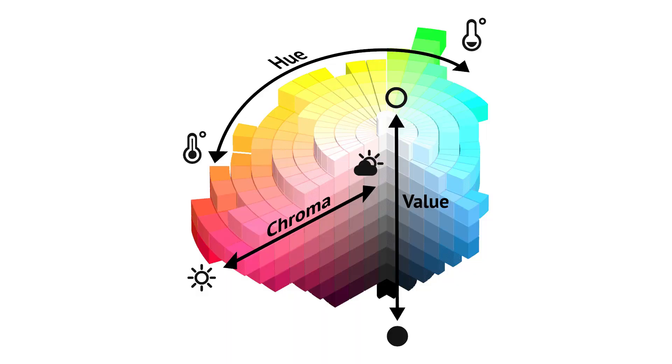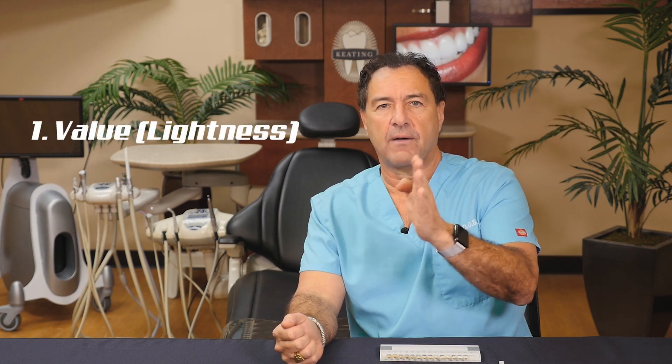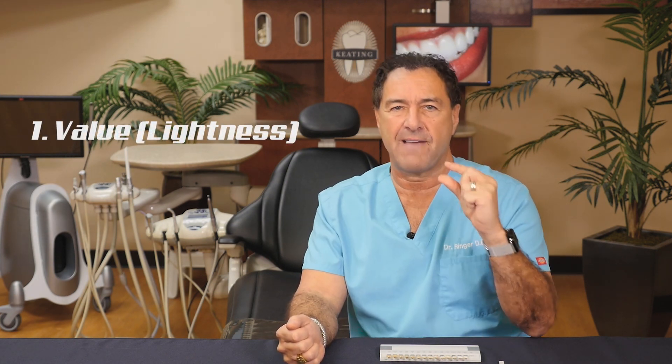What are the dynamics of color and shade taking? When we talk about color, it is comprised of three components. The first, which is the most important thing when you take a shade, is what we call value — how light or dark that tooth is. When we take a shade, we first want to determine, using our shade guides, the different value of the tooth. Find that value.